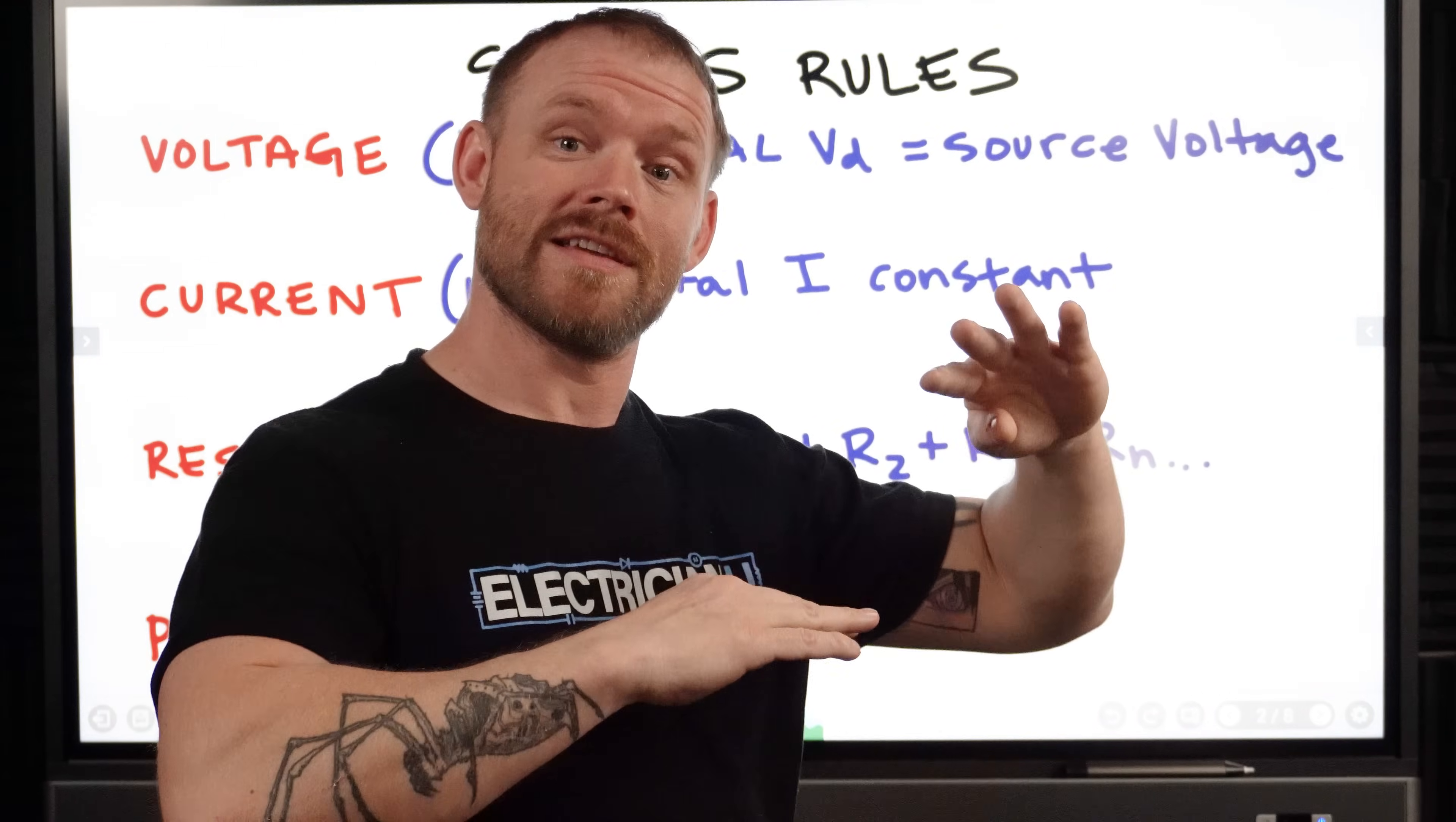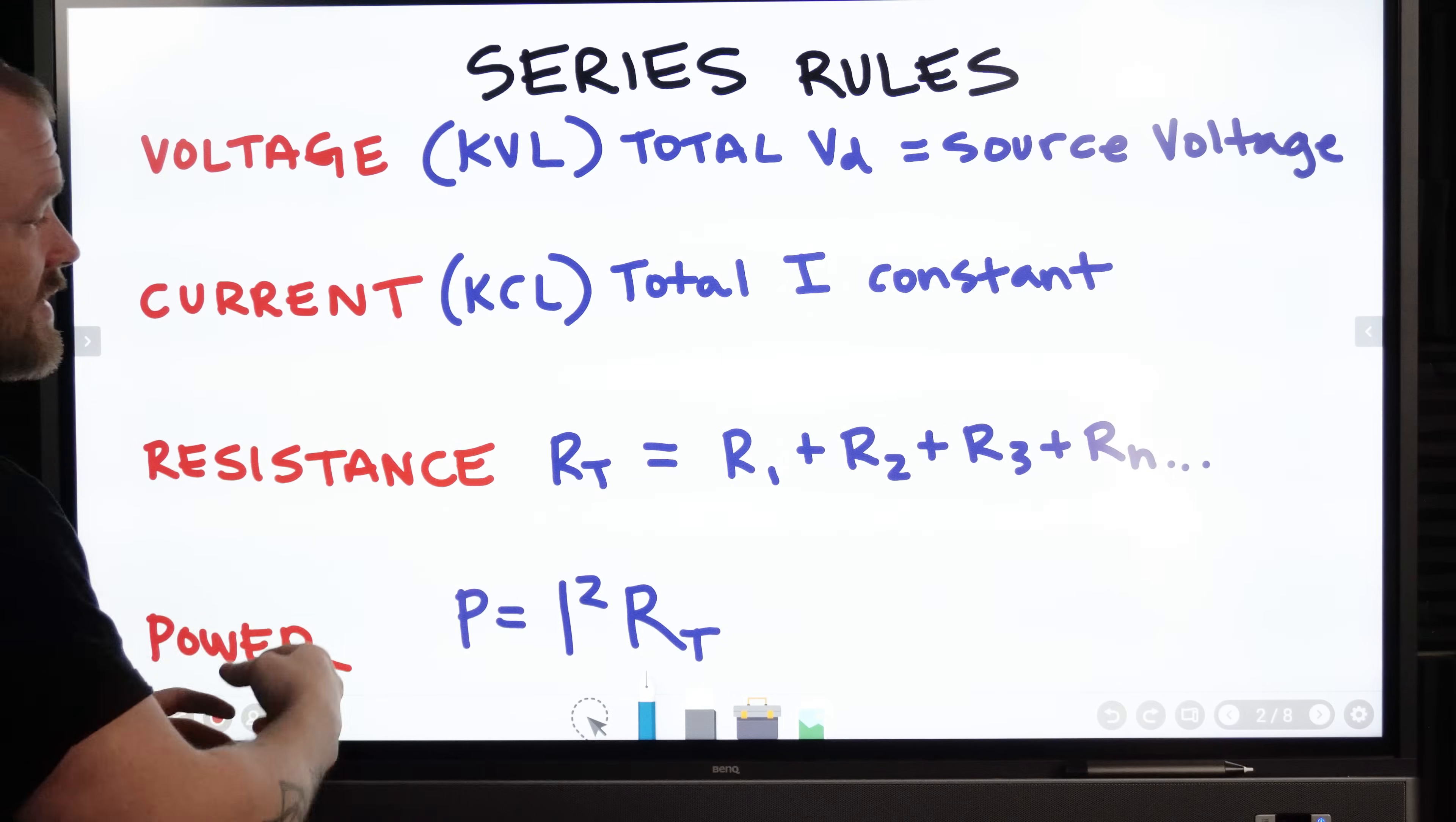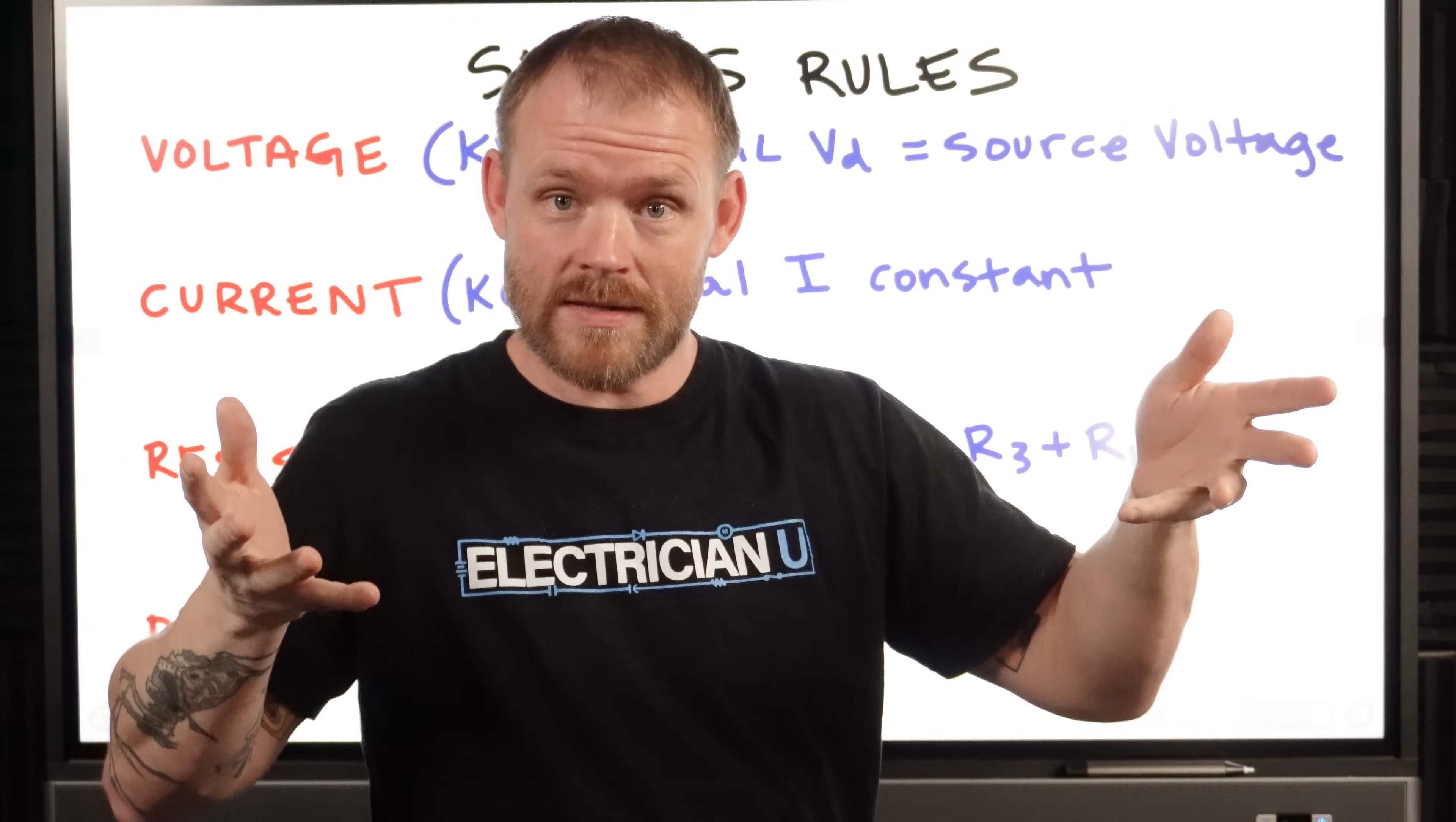So just remember voltage is going to change or voltage is going to drop and current is going to stay constant. When we get into parallel circuits, that sort of flips a little, but for series, just think about you're stacking things in order, you're dropping voltage across each one and your current is the same. Then once we get to resistance, your total resistance is going to be just the sum of all of those resistances. If we've got a bunch of little resistances, we're just adding them all up to make one large resistance.